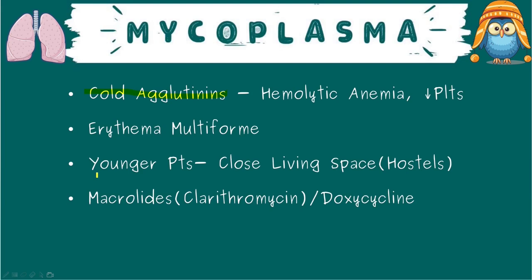The disease hits younger patients, giving them headaches, malaise, and cough. Interestingly, chest X-ray findings may be much more severe than the patient's actual clinical condition. Erythema multiforme is commonly associated with Mycoplasma. Extra-pulmonary complications include vomiting, diarrhea, meningoencephalitis, bullous myringitis — those painful vesicles on the tympanic membrane — pericarditis, myocarditis, hepatitis, pancreatitis, ITP, and acute glomerulonephritis.